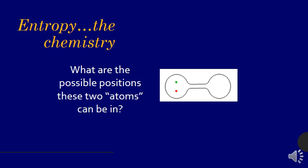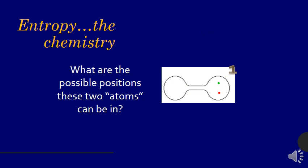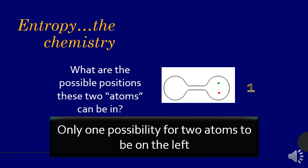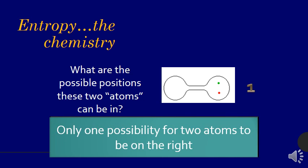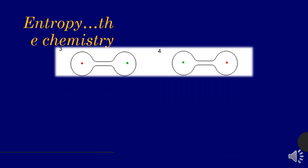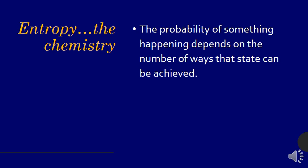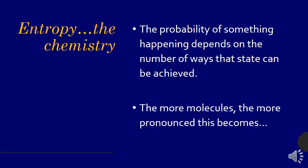So taking a look at probability, what are the possible positions these two atoms can be in? Well, right now, I'd call that one position. They're on the left side. Then we have another option. There's one option where they could be on that side. There's only one possibility for the two atoms to be on the left, and there's only one possibility for the two atoms to be on the right. So the chances of that happening are pretty slim, but what about the possibilities for there to be one atom on each side? You could have it like that. There's two possibilities. So this is much more likely to happen. And the probability of something happening depends on the number of ways that you can get there.